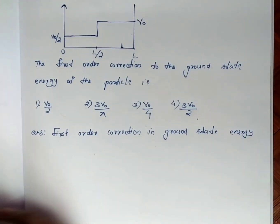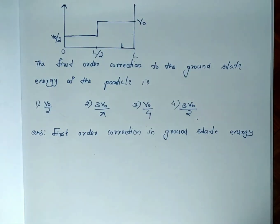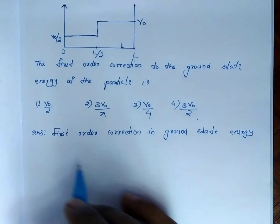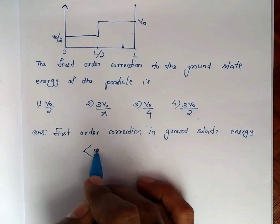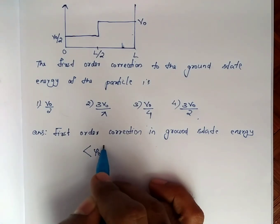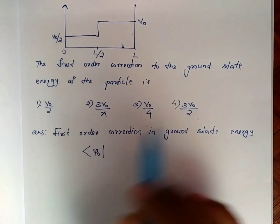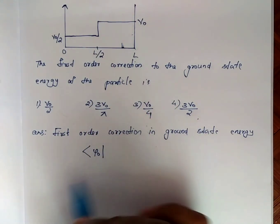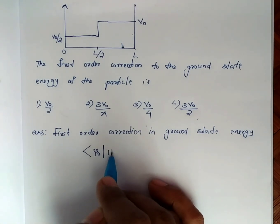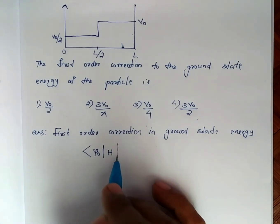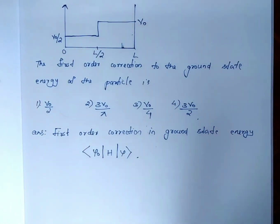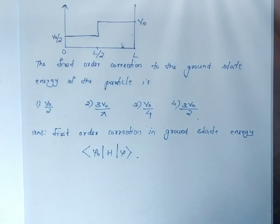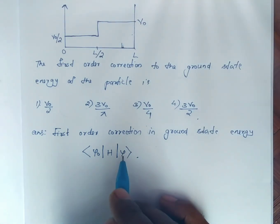We need the ground state wave function. The first order correction is given by the expectation value: bra psi-0, perturbation, ket psi-0. So this is the matrix element of the perturbing Hamiltonian evaluated in the ground state.